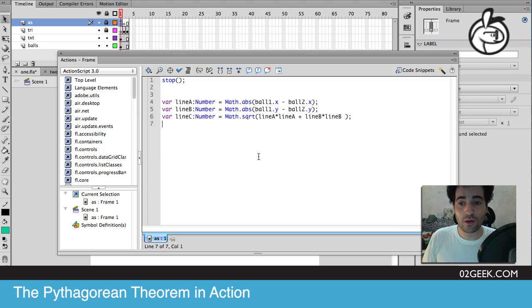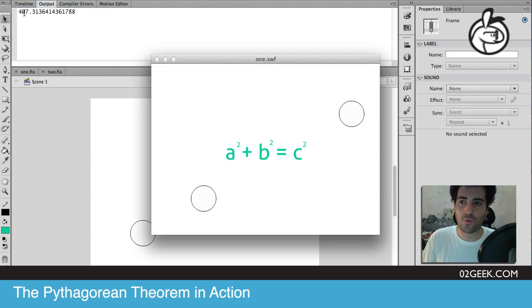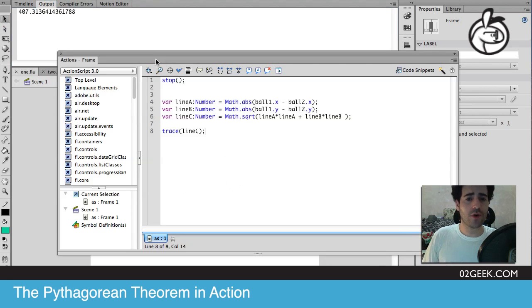There we go. And we've just created, using the Pythagoras theorem, we are now able to see the length of our line. And if we run our application, we will be able to see the value, and it is 407 dot yada yada yada. Great. So far, so good.